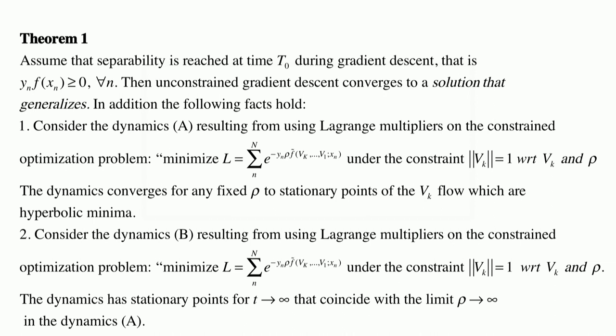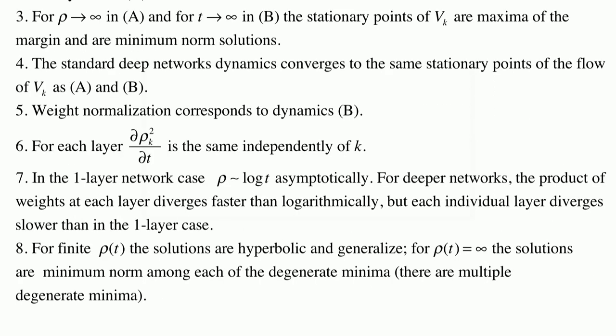So a summary of the results is that assuming separability, then we have that gradient descent converges to a normalized solution that generalizes. And you have these various facts. You have that the dynamics of the V converges to stationary point of the flow. These are hyperbolic minima. If you do the gradient descent under this constraint, you convert to the same stationary point. These convergence points are maximum of the margin, minimum norm solutions. These standard deep networks converge to this. With the normalization correspond to the Lagrange multiplier dynamics. Essentially repeating what I said.